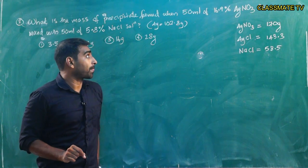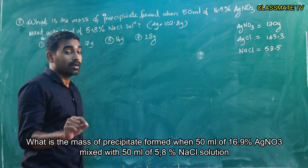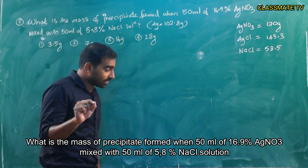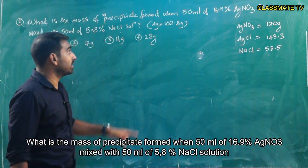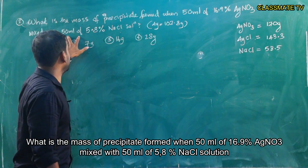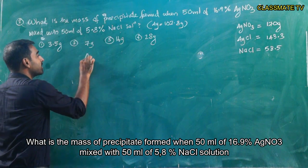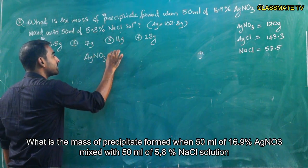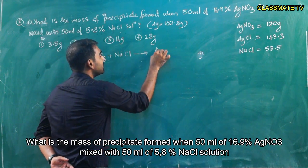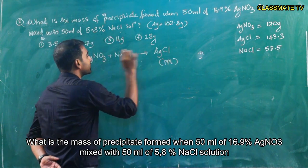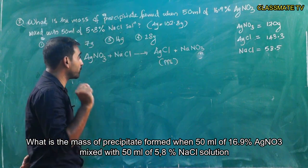The next question is from stoichiometry. What is the mass of precipitate formed when 50 ml of 16.9% AgNO₃ is mixed with 50 ml of 5.8% NaCl solution? The reaction: AgNO₃ + NaCl → AgCl (precipitate) + NaNO₃.